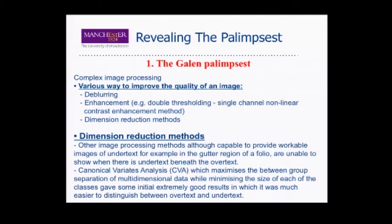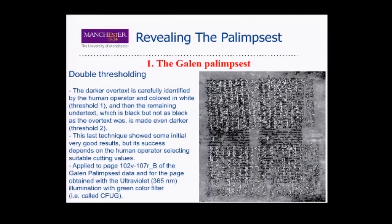Complex image processing. There are various ways to improve the quality of an image by deblurring enhancement, such as double thresholding or dimensionality reduction methods. Dimensionality reduction methods — other image processing methods, although capable of providing workable images of undertext, are unable to show when there is undertext beneath the overtext. Canonical variance analysis seems already the best method. Double thresholding: the darker overtext is carefully identified by the human operator and colored white — threshold one — and then the remaining undertext, which is black but not as black as the overtext, is made even darker. This technique shows some initial very good results, but its success depends on the human operator selecting suitable cutting values.